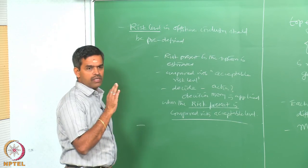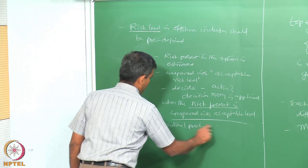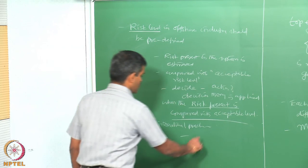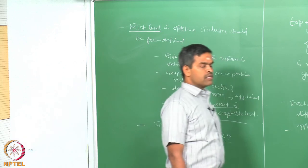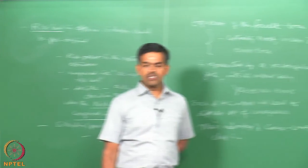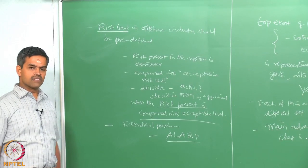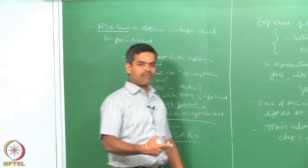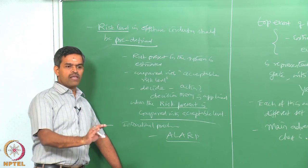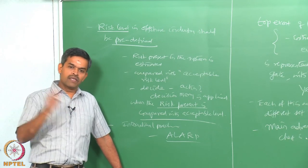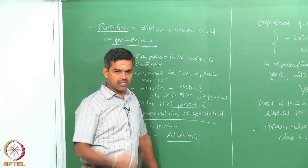One needs to predefined the acceptable level of risk in offshore industry, which is truly standardized as per international practice. People define risk in offshore industry using a concept called ALARP, which means the risk is as low as reasonably practicable. Offshore industry is one where zero risk is not possible, but you can always predefine the acceptable level. You cannot define the risk subsequently after you do the risk analysis — you must predefine the acceptable level, then do a risk analysis, compare that, and recommend actions to bring down the risk level or consequences or both.